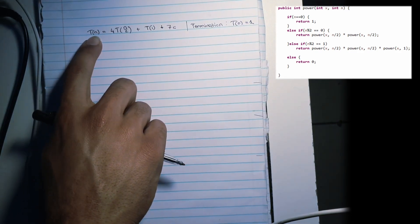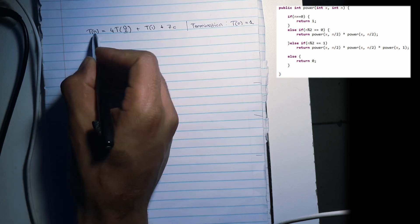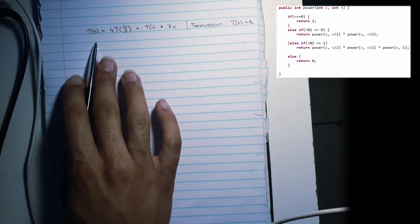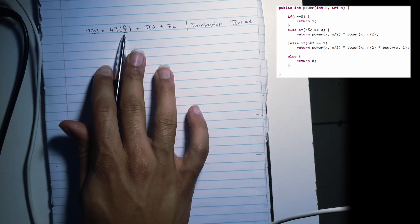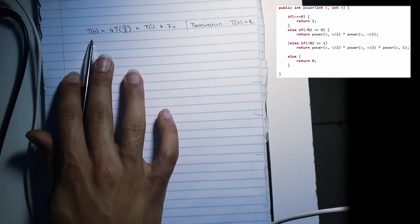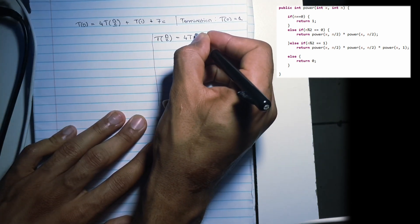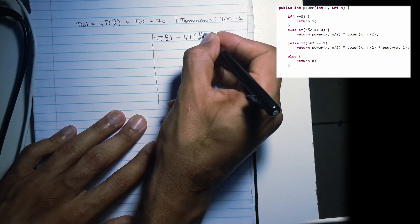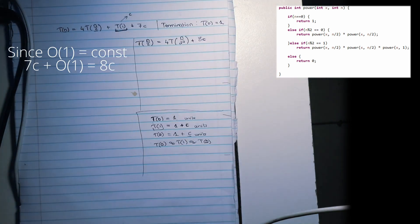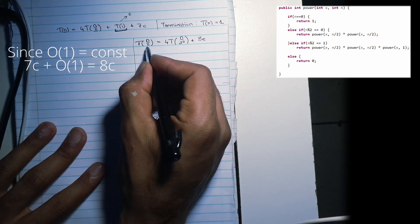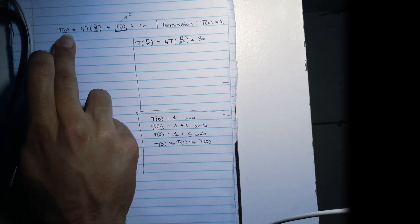Now we need to come up with three different expressions by substituting different values of N. We're going to find out what we get by substituting N over two. What's T of N over two? You'll find that it equals 4T of (N/2)². Plus — that's why it's 18. Let's proceed: what happens when we substitute the value of (N/2)² in our initial formula?